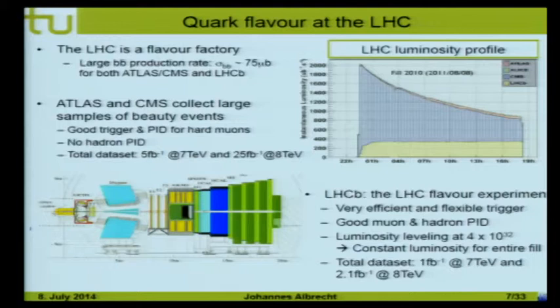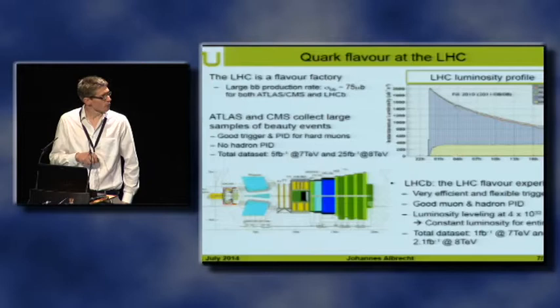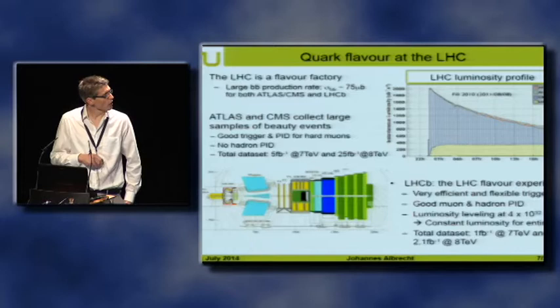ATLAS, CMS, and LHCb all have extensive flavor programs. ATLAS and CMS mostly rely on good trigger and PID for hard muons, don't have hadron PID, and collected total data sets of about 30 inverse femtobarn. LHCb is a dedicated flavor experiment with a very flexible trigger — making LHCb dominant on the map — and also has very good hadron PID with two Cherenkov detectors, enabling a much wider range of measurements. LHCb runs at lower instantaneous luminosity, with a total dataset of 3 inverse femtobarn.